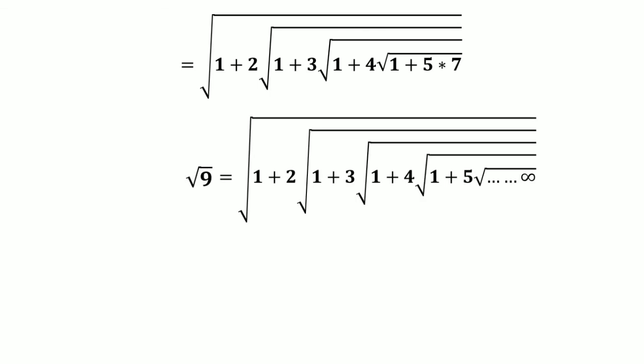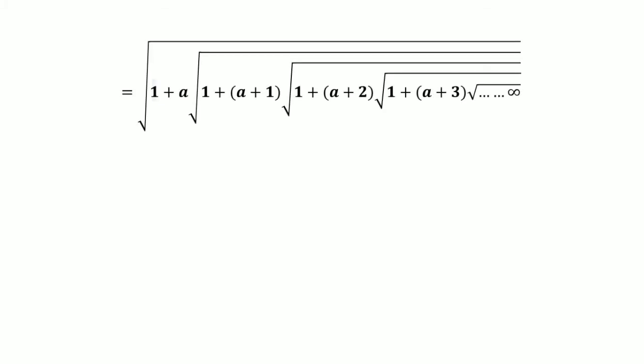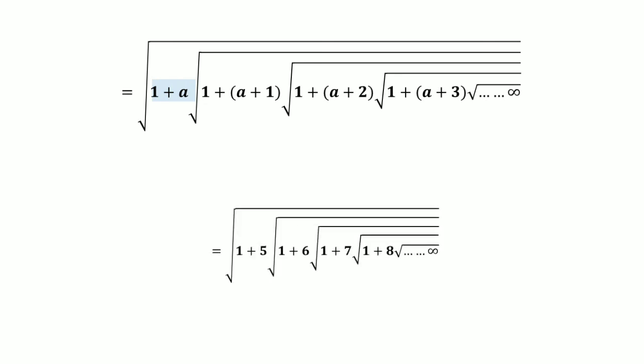The answer to this whole result equals √9, which equals 3. It is the same as the sum of the first two terms shown on the screen. If anybody asks you this question in this form, the answer is the sum of those two terms. For example, the answer to this equation equals 1 + 5, which equals 6.